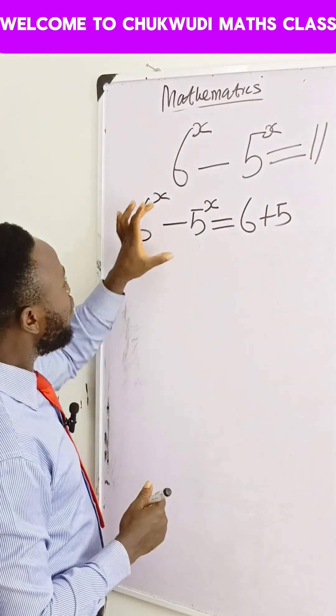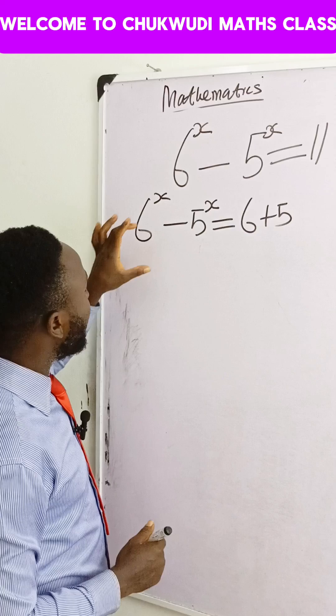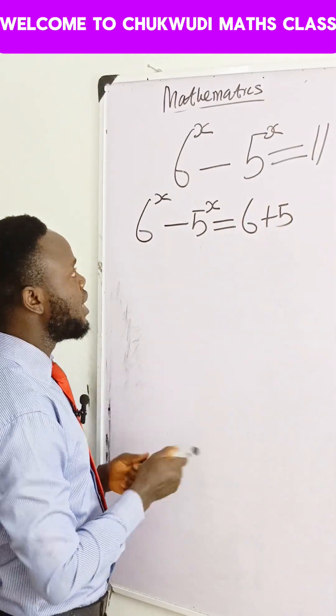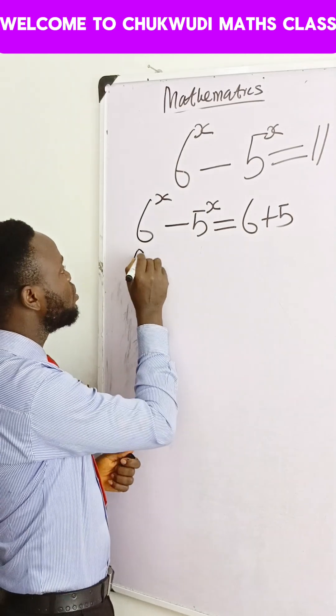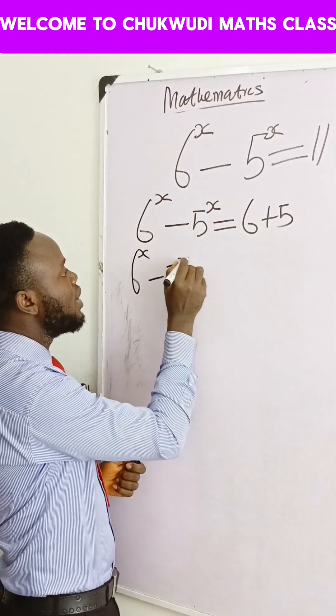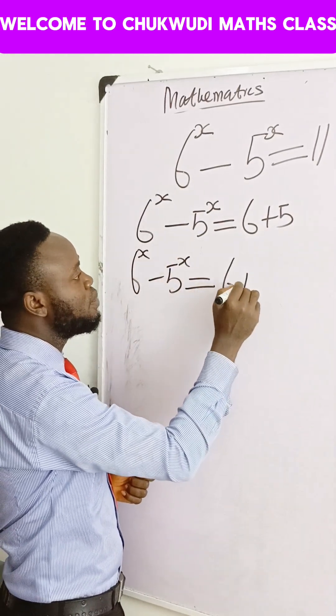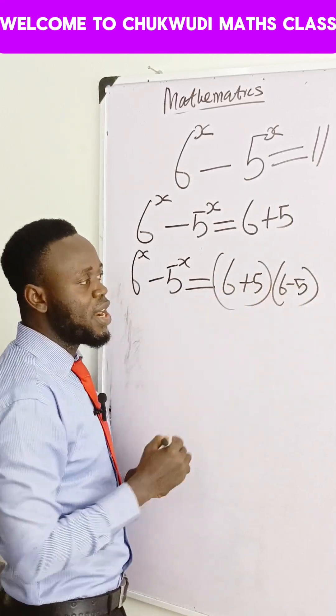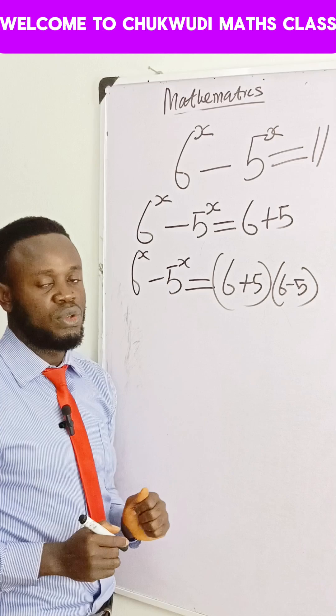Alright, if we look at this left hand side, this thing looks like difference of two squares. Let's see if we can express this one also in the same way. So we now have 6 raised to power x minus 5 raised to power x is equal to 6 plus 5 times 6 minus 5. We are marching towards difference of two squares.